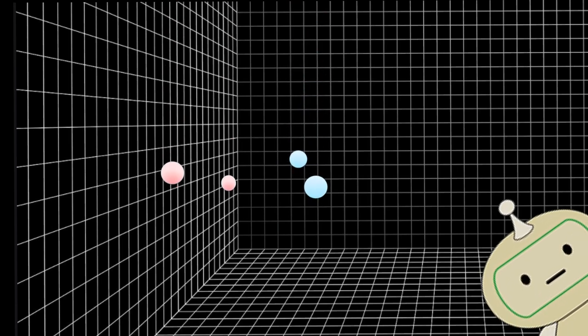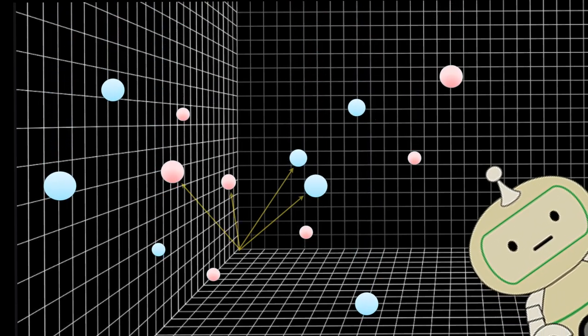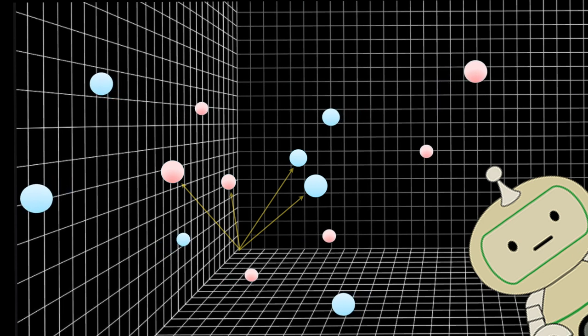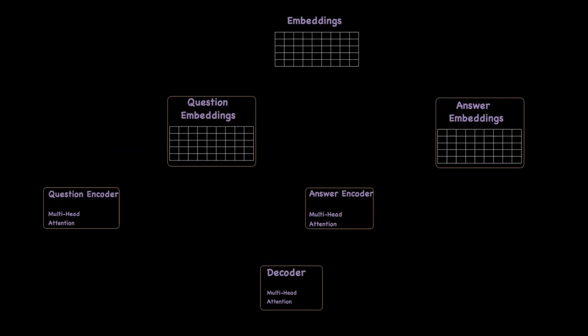The transformer neural network can be used for classification and question answering. At the core is the multi-head attention network. In this video, we will show the attention network's algorithm in action. The question encoder, answer encoder, and decoder are all attention networks. They need embeddings as input — this can be the question embedding or the answer embedding. Let's see how this all works.